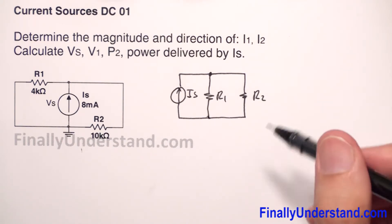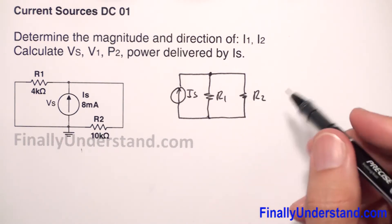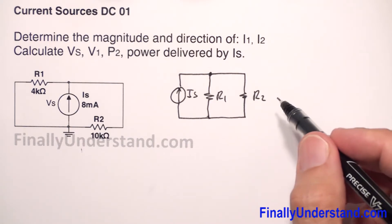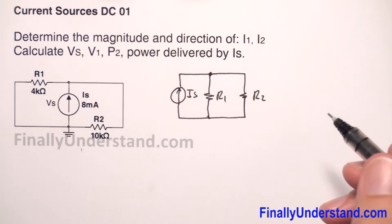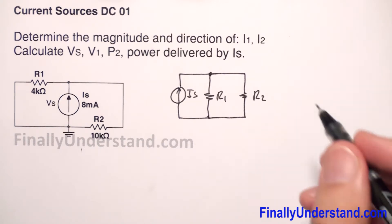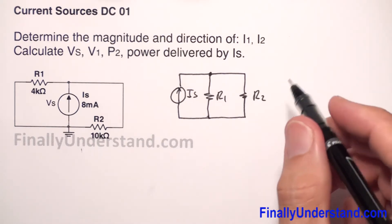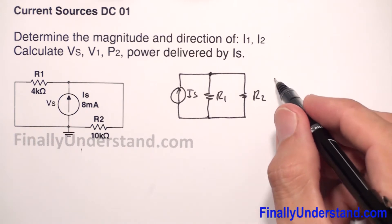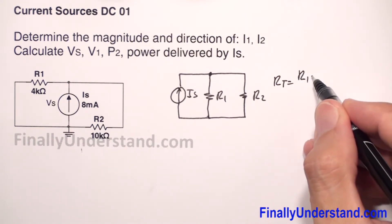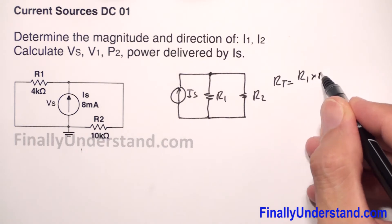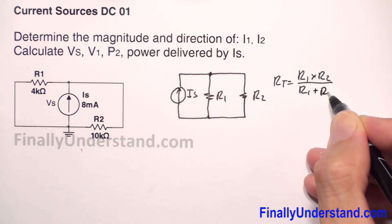So what we are supposed to do is simply find the total resistance and use the current divider rule in order to find current I1 and I2. So what I would do? I would simply write that my R_total is equal to R1 times R2 over R1 plus R2.